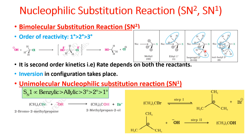For the isopropyl group (secondary), the attack is about 0.02%. For the tertiary carbon, attack is essentially 0% and reactivity is the lowest. So the SN2 reactivity order is: methyl > primary > secondary > tertiary.